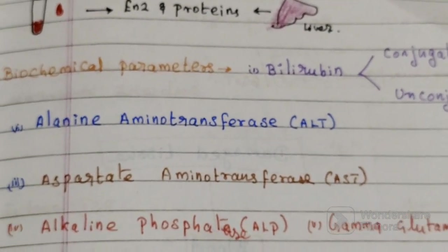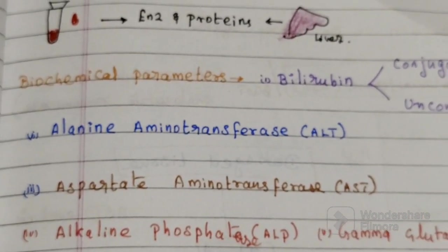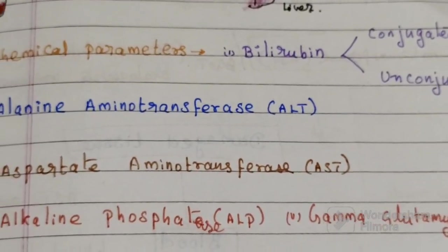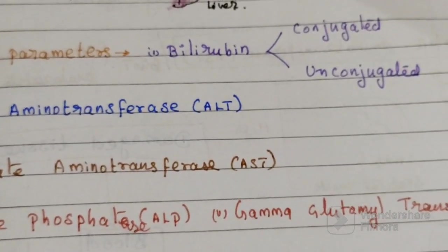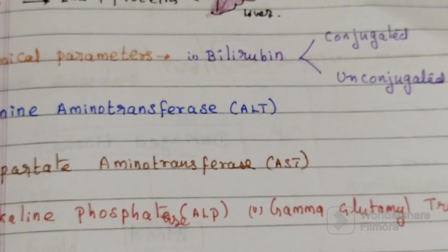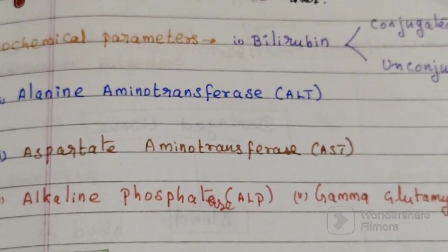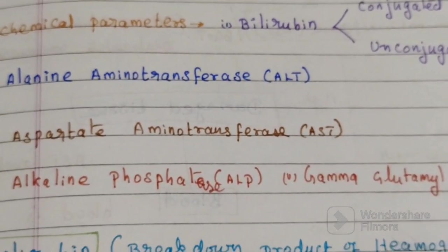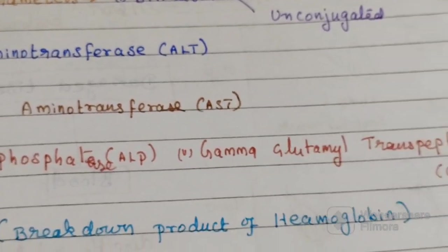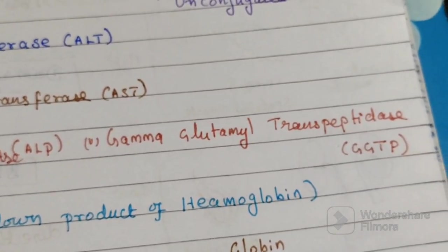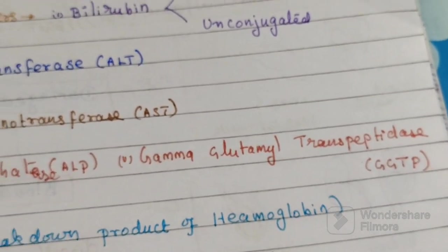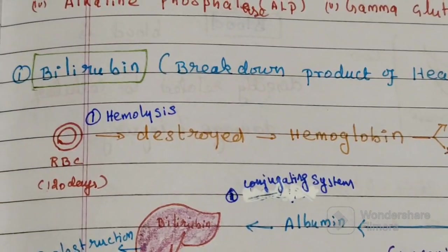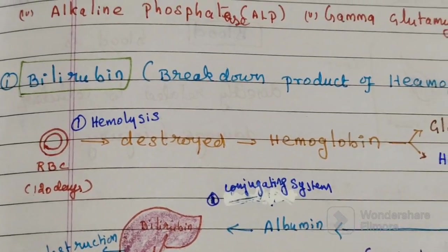These are the five parameters used to assess liver function: bilirubin (conjugated and unconjugated), alanine aminotransferase (ALT), aspartate aminotransferase (AST), alkaline phosphatase (ALP), and gamma-glutamyl transpeptidase (GGT). Totally five parameters. Let's now see each of them one by one.